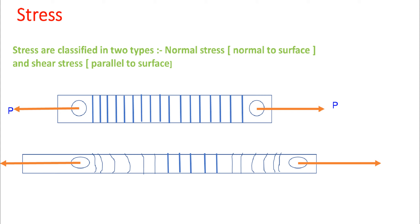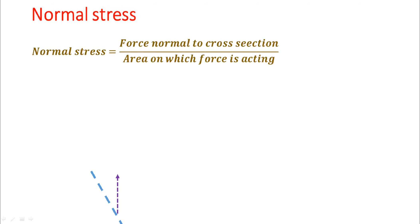But what will happen when you use the method of section? You will get the same resultant at each section. So now let's go to the mathematical definition of normal stress. Normal stress is the force normal to the cross-section divided by the area on which the force is acting — that is the cross-sectional area. If it is a rectangular bar, it will be the area of a rectangle; if it is a circular bar, it will be the area of a circle.